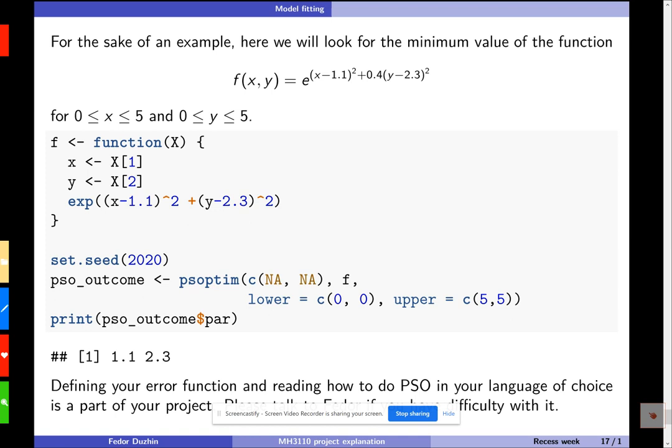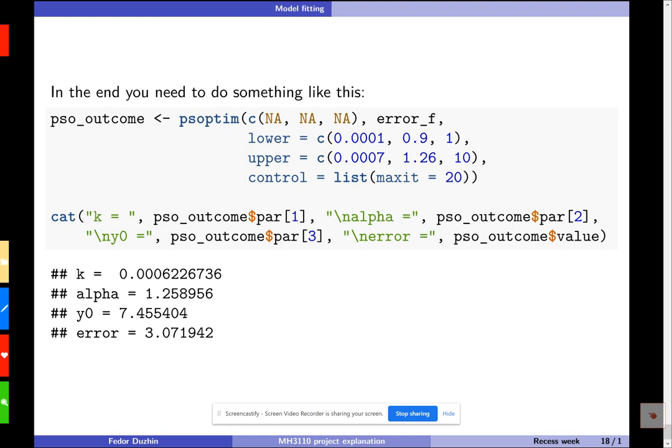Okay, so defining your error function and reading how to do PSO in your language of choice, or even in R. So I did it in R here, but I did not tell you which library I used. So maybe you will find a different library, right? So you need to do it yourself. This is a part of the challenge. Please let me know if you have difficulty with it. So I will help you. So in the end, you need to do something like this, right? So in the end, you need to write this error function.